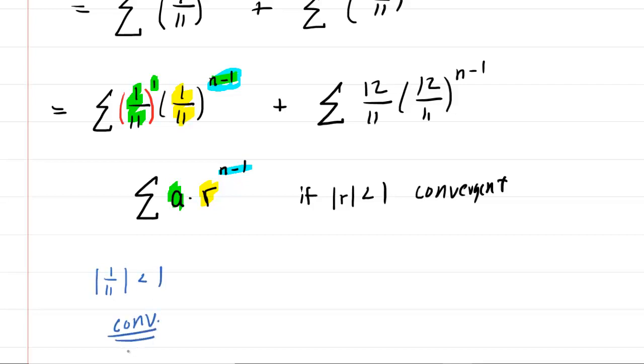But take a look at the second series. Now, the value of r in the second series is 12 11th, and the absolute value of 12 11th is definitely greater than one because the numerator is larger than the denominator. So that second series is actually divergent.